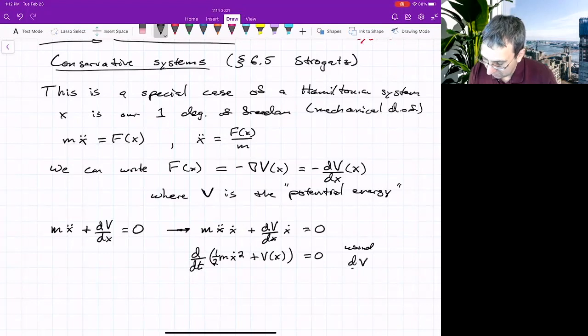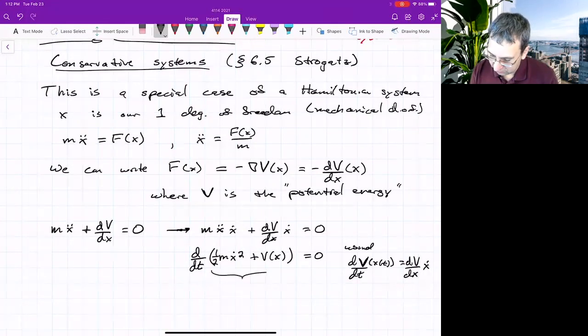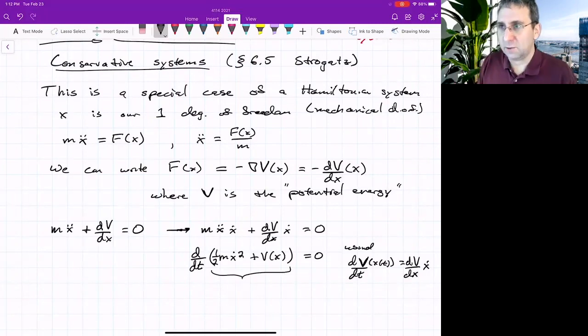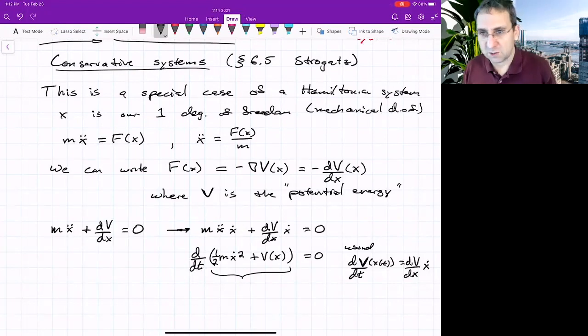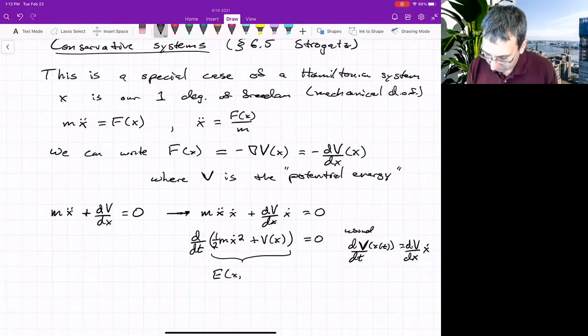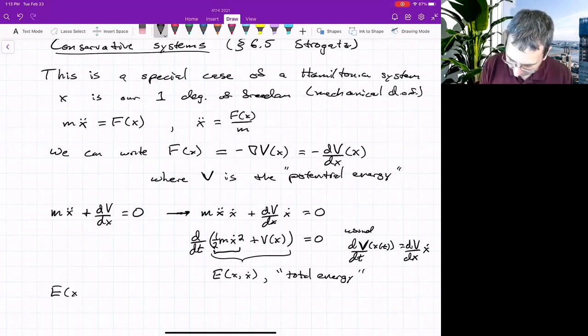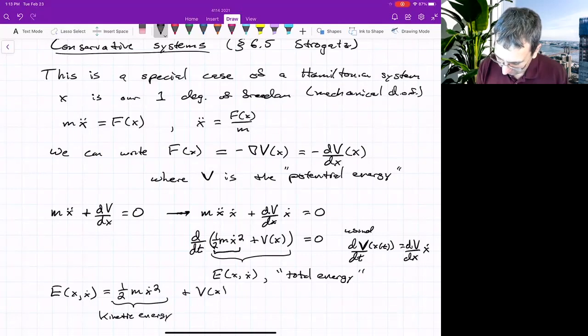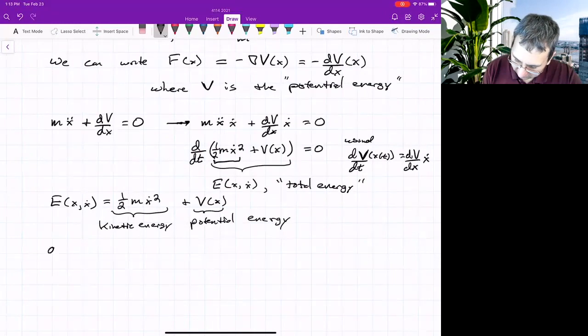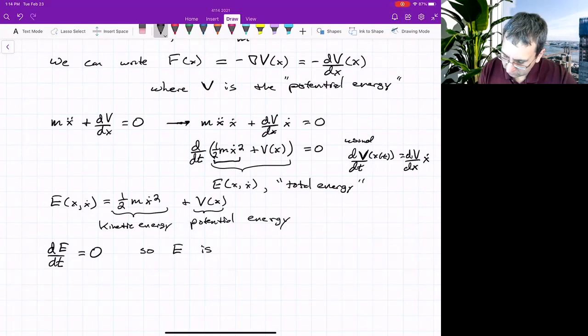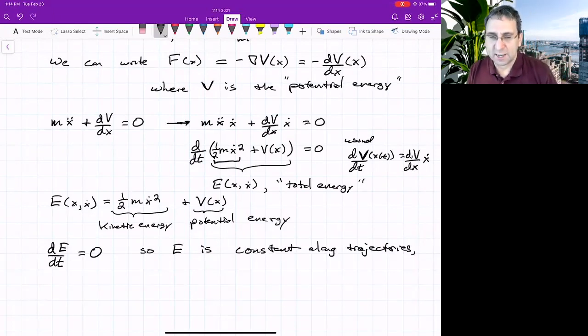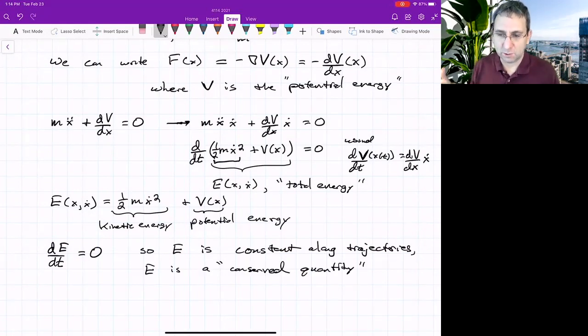But this left-hand side, we could also view it as the total derivative of 1 half mx dot squared plus v of x. That'll give us up above using the chain rule. We're using dv dt, where v is a function of x, which is a function of time, is going to be dv dx x dot. So this means that the thing inside the parentheses is a function that remains constant along trajectories of our two-dimensional ODE system. So we'll call this the total energy, the function of x and x dot. The total energy is the potential energy plus this other thing, which is the kinetic energy. E x and x dot is 1 half mx dot squared plus v x. So total energy is kinetic plus potential energy. And we've got dE dt equals 0. So E is constant along trajectories. Another way we say it is that this is a conserved quantity. And that's where we get the label conservative system.